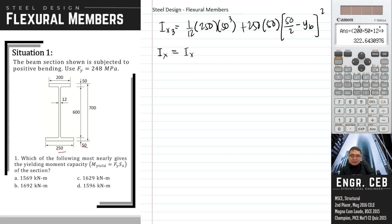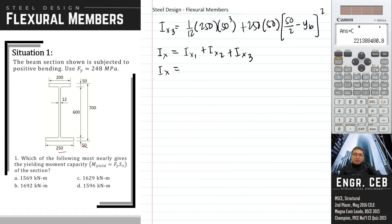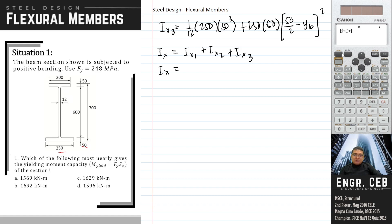We add Ix₁ plus Ix₂ plus Ix₃. Ix₁ is computed and stored, then Ix₂ is solved and stored, and finally Ix₃ is solved and stored. Summing all three gives the centroidal moment of inertia, which equals approximately 2,575,022,517 mm⁴.